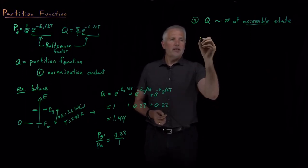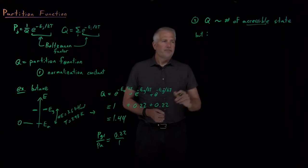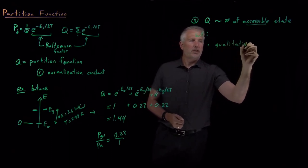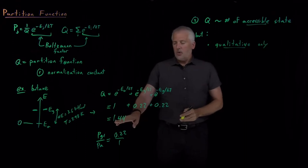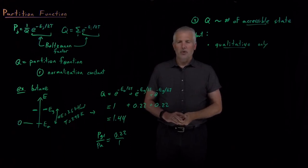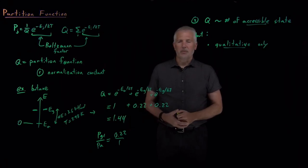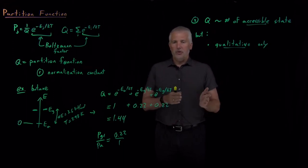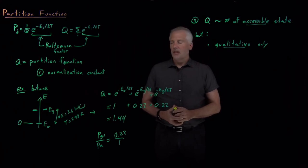There are a couple of caveats to be aware of with that interpretation. Number one, that interpretation is really only a qualitative way of understanding the system. If I say 1.4 of the three states are accessible, that statement doesn't actually make a tremendous amount of quantitative sense. What does it mean if only 1.4 states are accessible? Kind of like the average number of children in a family is 2.5 — you either have two children or three children. Talking about a fractional average number of states is not entirely sensible.